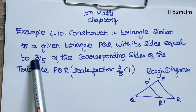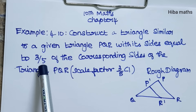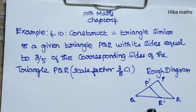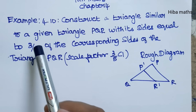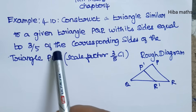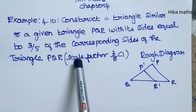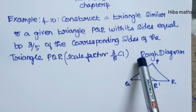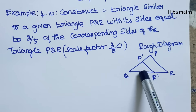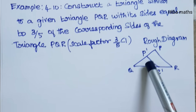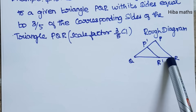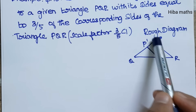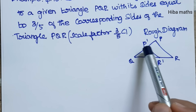Since the scale factor is 3 by 5, the denominator is 5 and the numerator is 3. We will make 5 divisions and connect with the line. In the rough diagram, PQR has 5 divisions with 3 marked.